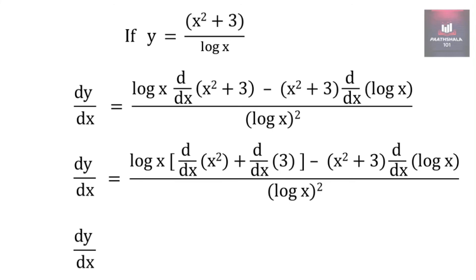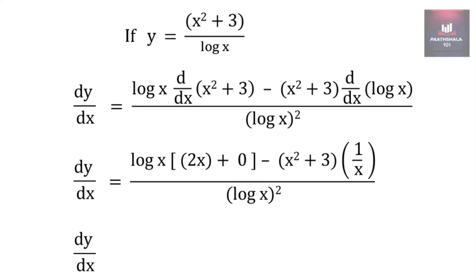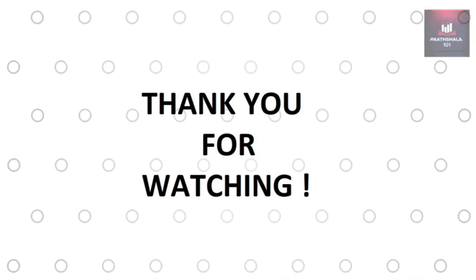The derivative of x square is 2x, the derivative of 3 is 0, and the derivative of log(x) is 1 by x. So it becomes log(x) times (2x + 0), minus (x square plus 3) times 1 by x, which on simplification becomes 2x log(x) minus (x square plus 3) upon x, all upon log(x) squared. Hope you understood the concept. Thank you for watching this video.